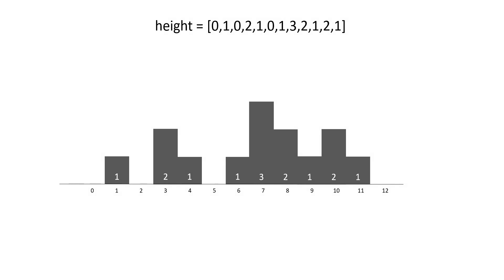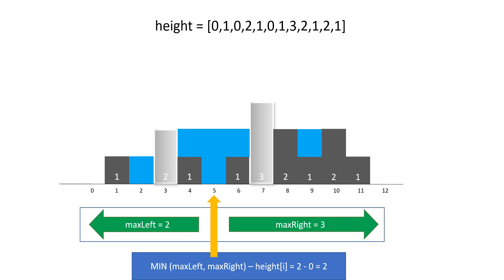Let's understand this question. If we draw the bars according to the given array, this is what we get. And if we are said to fill the water in this shape, the water will accumulate in the valleys. So how do we find how much water is there on each bar at each index? Suppose we take index 5.